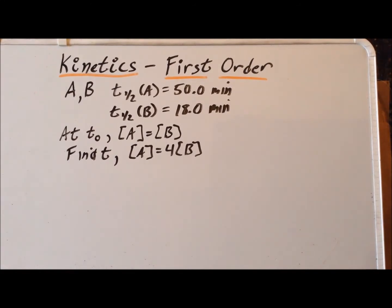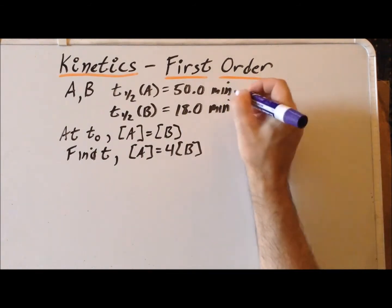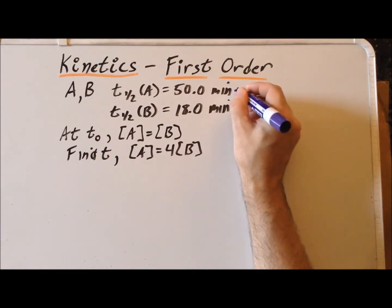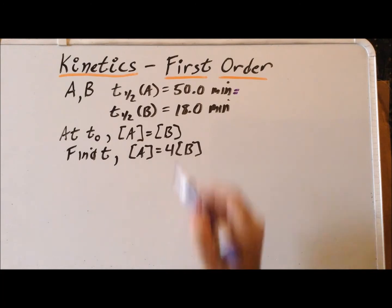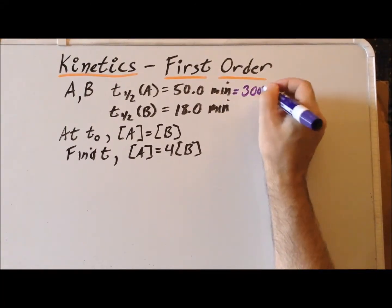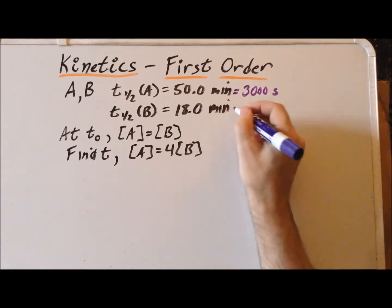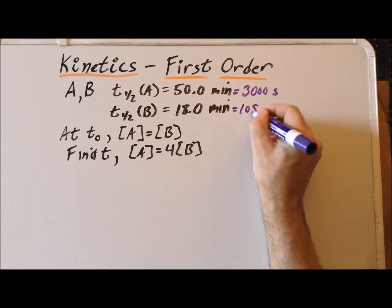For our first step, let us convert the half-lives from units of minutes to units of seconds, which are the standard units for the first-order rate constant — inverse seconds. So, 50 minutes works out to be 3,000 seconds, and 18 minutes is 1,080 seconds.